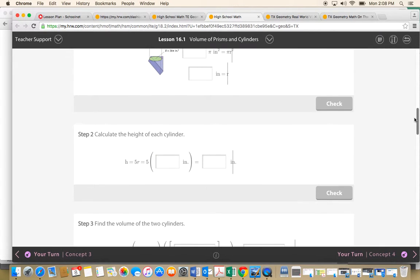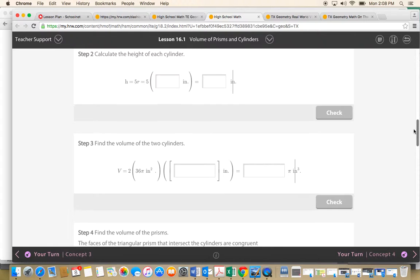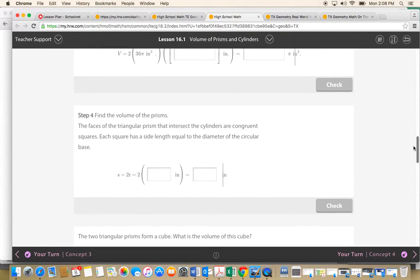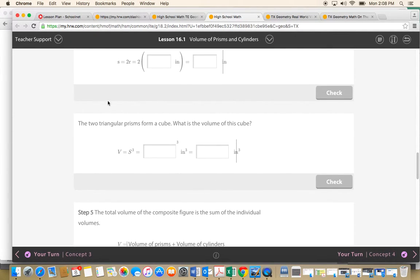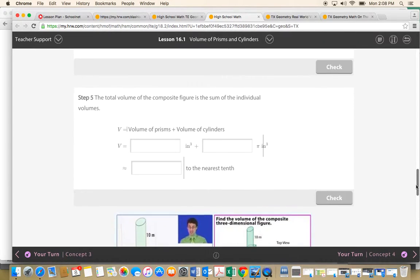They're going to start by finding the height of the cylinders, then the volume of the two cylinders. And then they'll find the volume of the prisms. The two triangular prisms form a cube. What's the volume of that cube? And then finally they're going to add everything together.